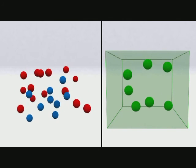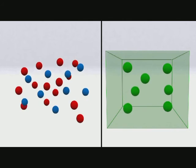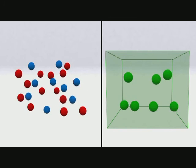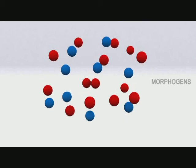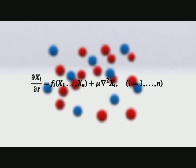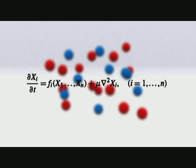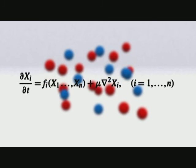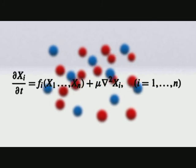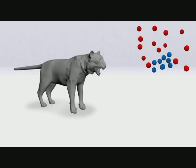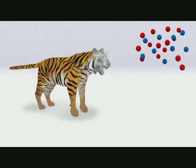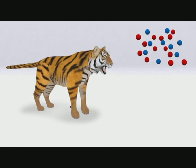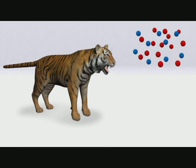Turing proposed that the two chemicals spread throughout a system much like gas atoms in a box — but with one crucial difference: instead of diffusing evenly, the chemicals, which Turing called morphogens, diffuse at different rates. Turing worked out a mathematical equation — a partial differential equation — that showed that when the activator and inhibitor diffuse at different rates, they can generate the exquisite variety of patterns that we see in the animal world.